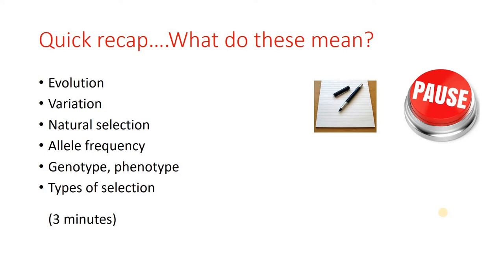Genotype and phenotype — you've done inheritance. So genotype: what alleles are present? Phenotype: the characteristics of the organism, what does it look like? Types of selection — we've done these last lesson. So things like stabilising selection, for example the mass of babies at birth. Disruptive selection, where the extremes are favoured and the middle isn't. And directional selection — things like fur getting longer if the climate's getting colder.